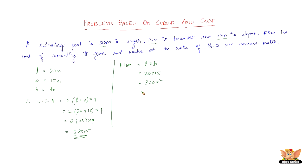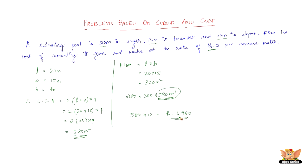The total area to be cemented is 280 + 300 = 580 square meters. The cost of cementing per square meter is Rs. 12, so the total cost is 580 × 12 = Rs. 6960. Therefore, the cost of cementing the floor and walls of the swimming pool at Rs. 12 per square meter is Rs. 6960.